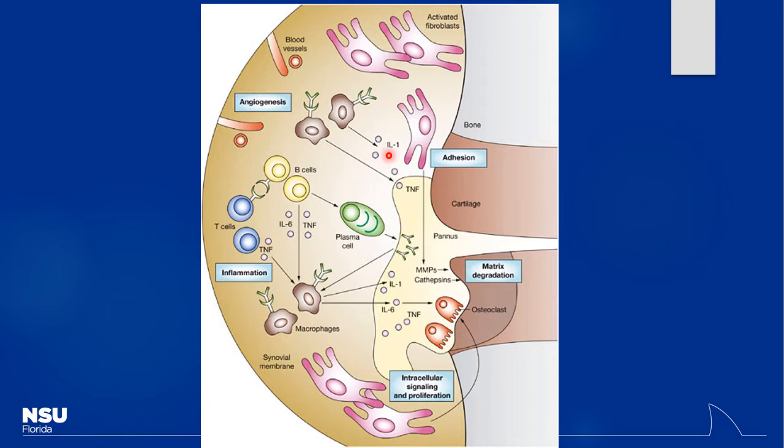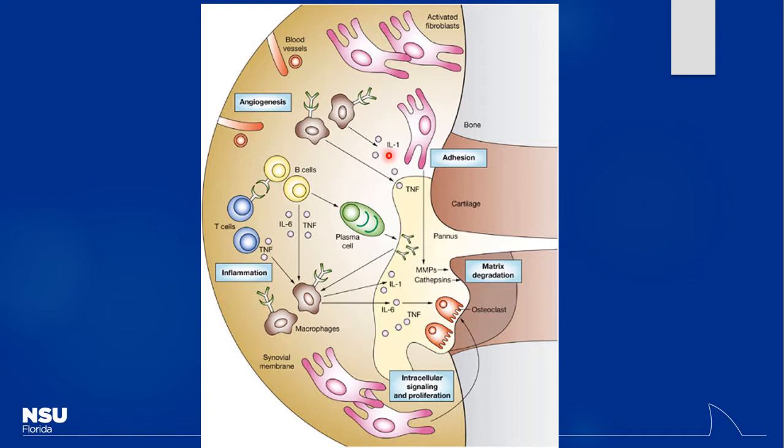Looking at a normal joint versus one with a more activated inflammatory system where a lot of joint destruction occurs — we're trying to save this as much as we can. By decreasing inflammation chronically, whether with methotrexate or infliximab, you're hopefully going to retain the ability for patients to use those joints effectively for longer. When you think about how to give a monoclonal antibody — can you give it orally?